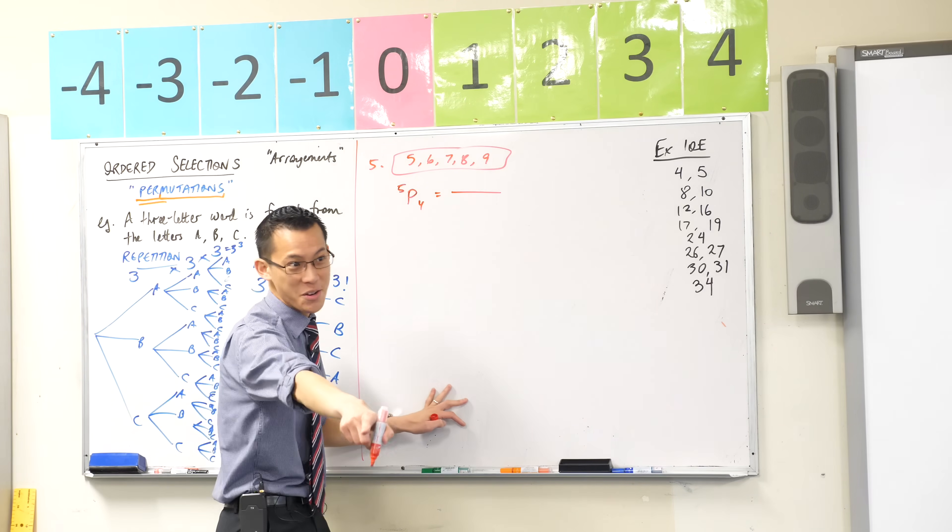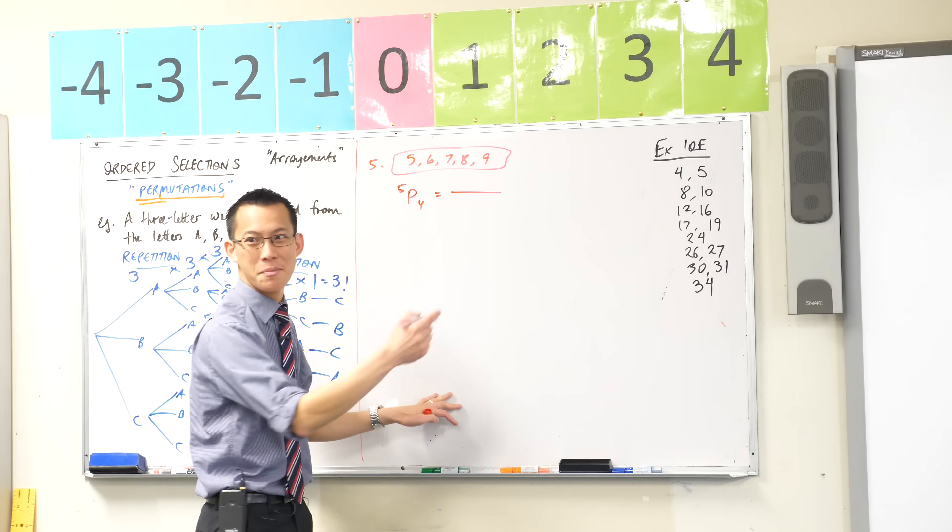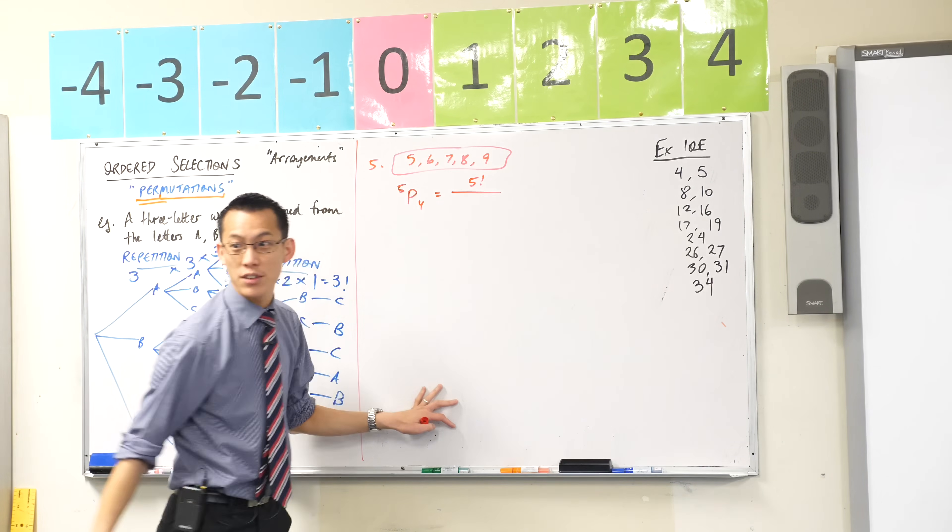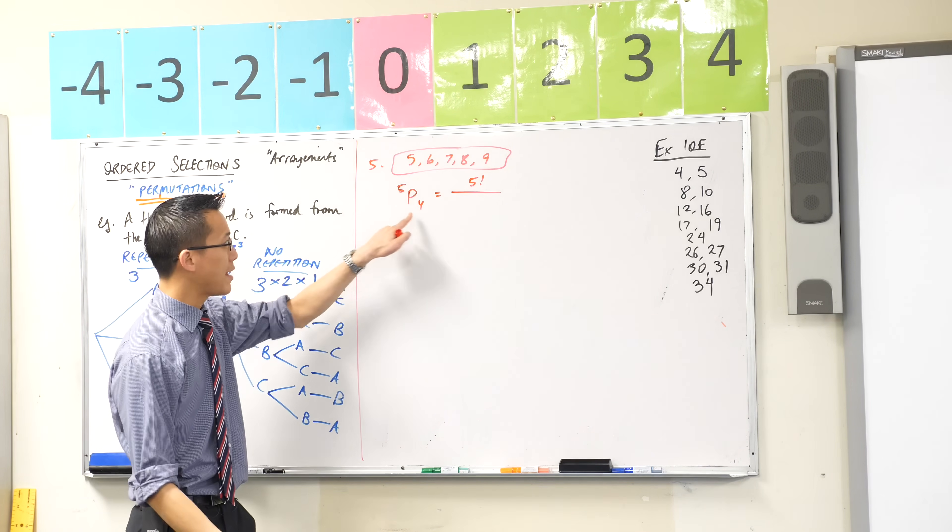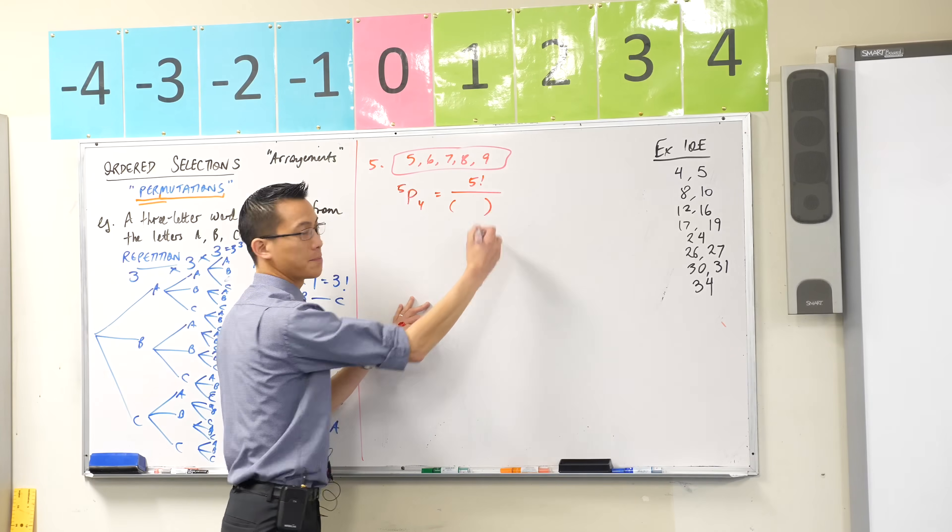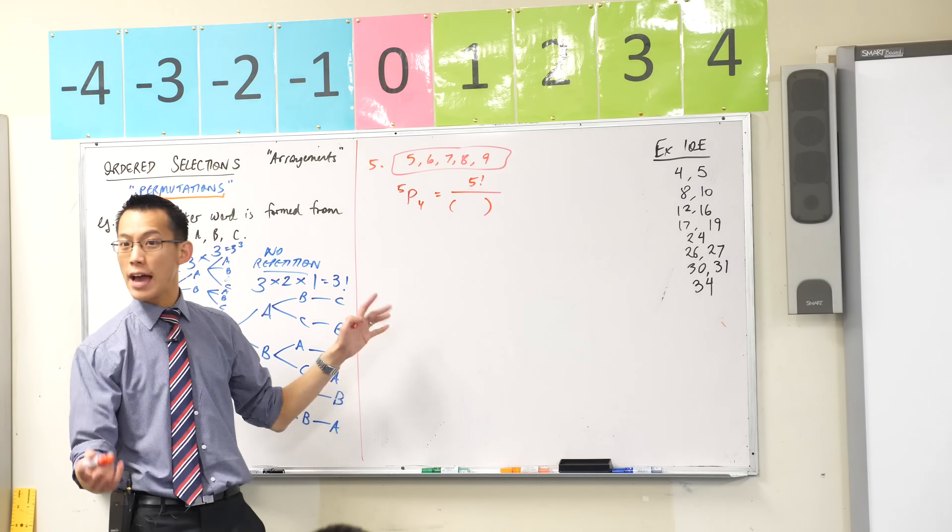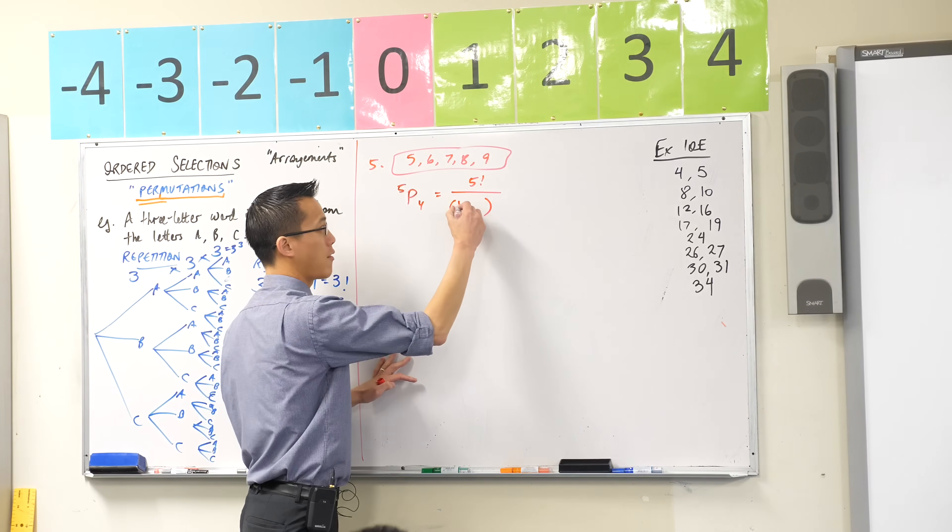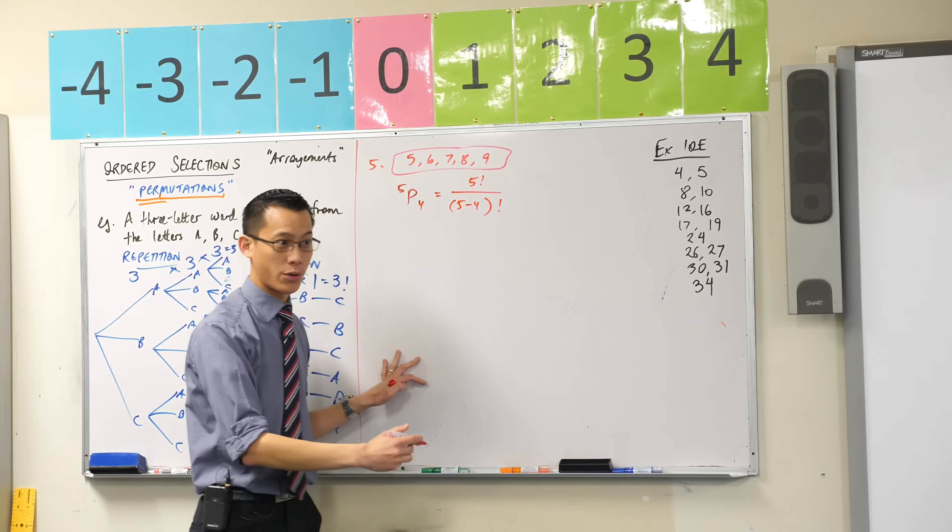Look, it's in your notes like half a page ago. It's going to be 5 factorial. That's how many things you have to choose from. But then on the denominator, what do I get? What's in the brackets? It'll be, yeah, 5 minus 4, right? 5 take away 4. Factorial.